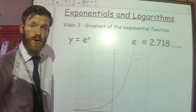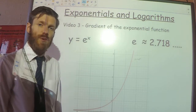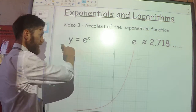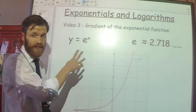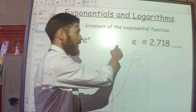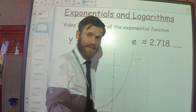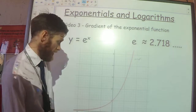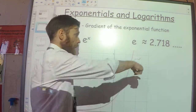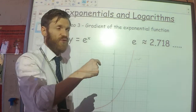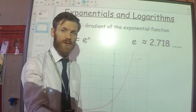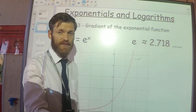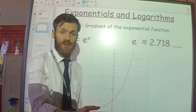This is the third video on exponentials and logarithms, where we're going to look at the gradient of the exponential function. The exponential function is y equals e to the power of x, introduced in the last video, where Euler's number is 2.718 to three decimal places. This number appears wherever you have continuous growth — continuous change where the change is proportional to the population you have in the first place.